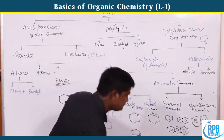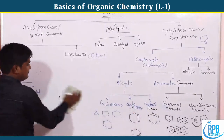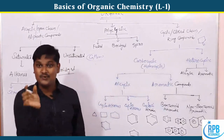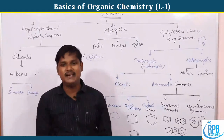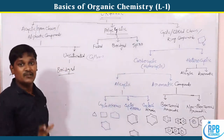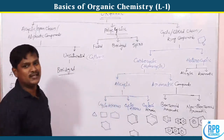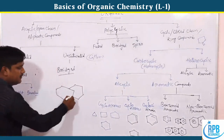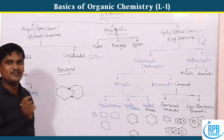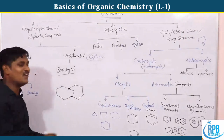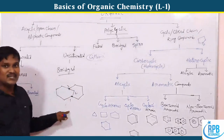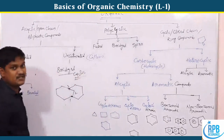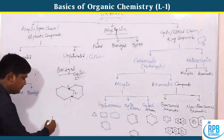Bridged cyclic compounds are different from fused ones. Instead of just two adjacent shared carbons, there are more than two carbon atoms connecting two rings — forming a bridge. The best example of bridged cyclic compounds is the norbornane (nor-bor-nine) type of system, with two five-membered rings connected by a bridge.